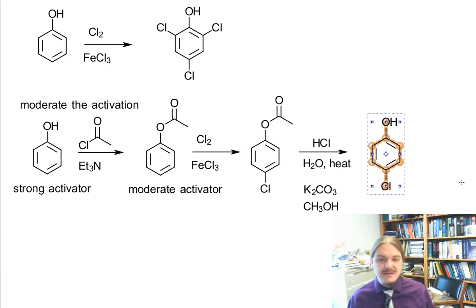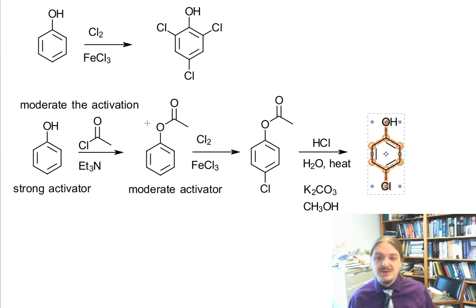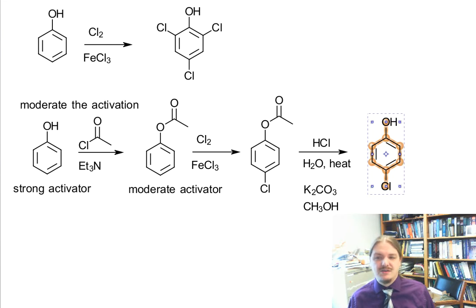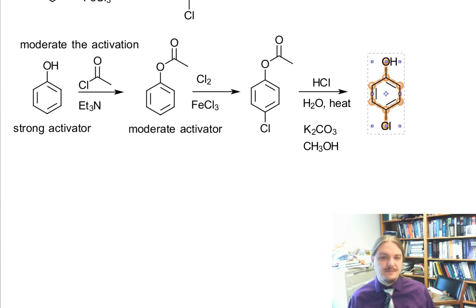So this is the strategy: convert the phenol into the ester. Now that there's the ester, it's no longer a strong activator — it's a moderate activator. Do the reaction you want, get the functional group in the para position, then hydrolyze the ester to regenerate the phenol.